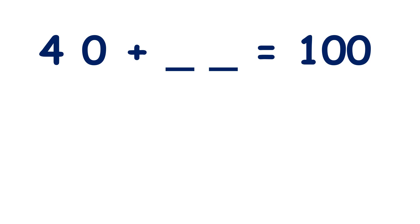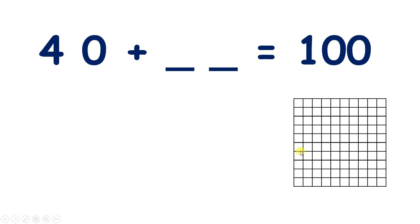So here we have a missing number problem. 40 plus something equals 100. So let's take a blank 100 square. If we have 40, then we have 1, 2, 3, 4 tens.